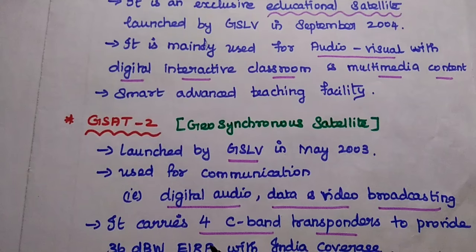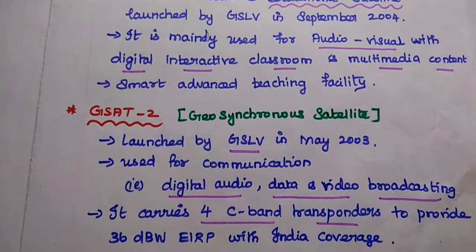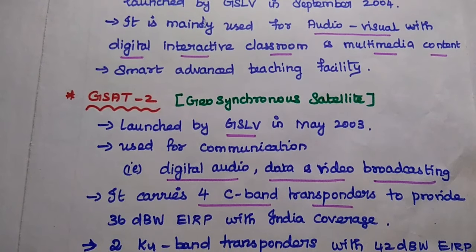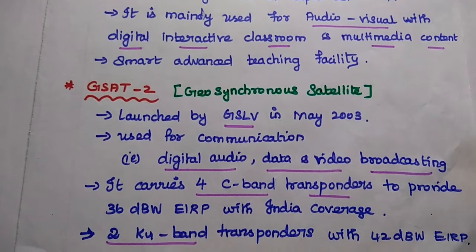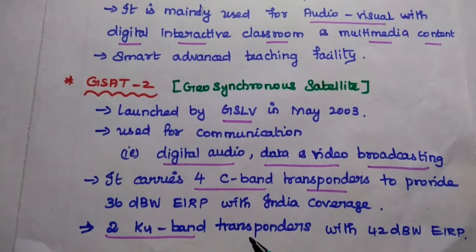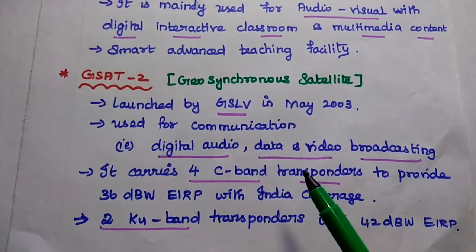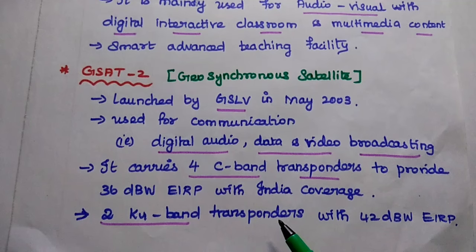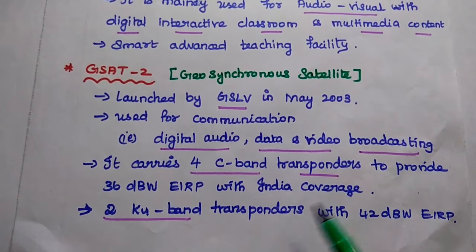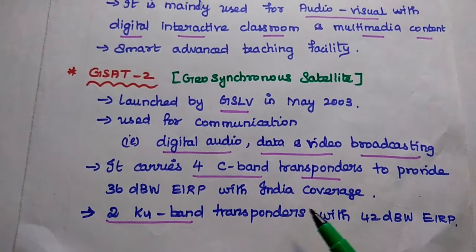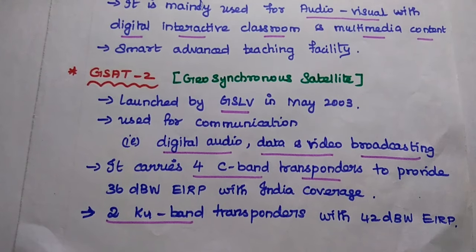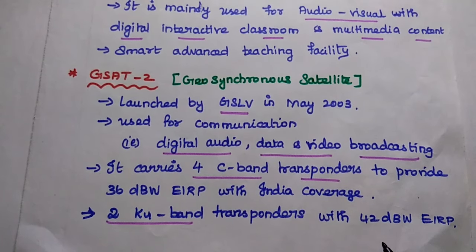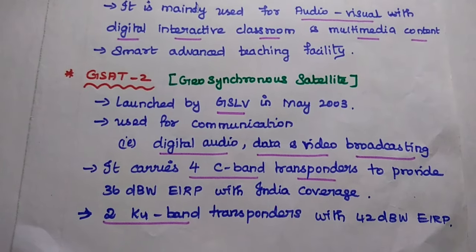The next one is GSAT-2, a Geosynchronous Satellite launched by GSLV-2 in May 2003. It is mainly used for communication, including digital audio, data, and video broadcasting. It carries 4 C-band transponders providing 36 dBW EIRP with India coverage, and 2 Ku-band transponders with 42 dBW EIRP.